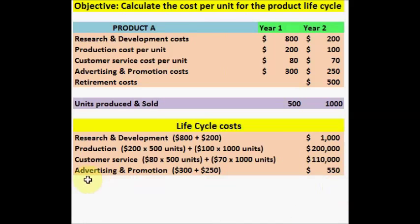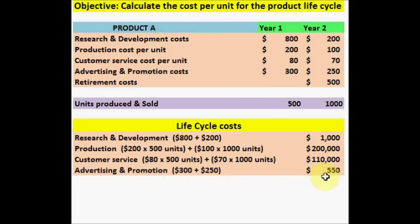Next step is to calculate the advertising and promotion. For year 1, the advertising and promotion cost is 300 and for year 2 it's 250. So 300 plus 250 gives a total cost of 550.